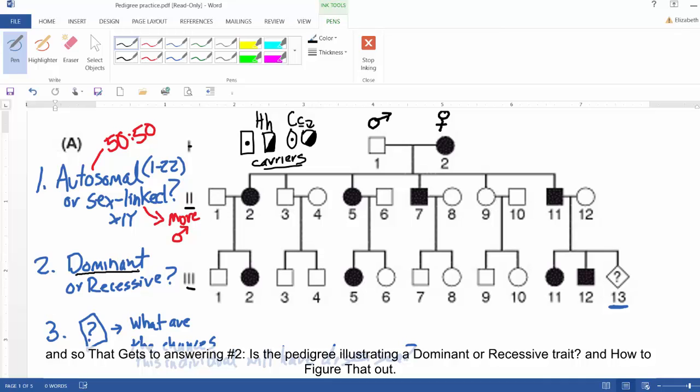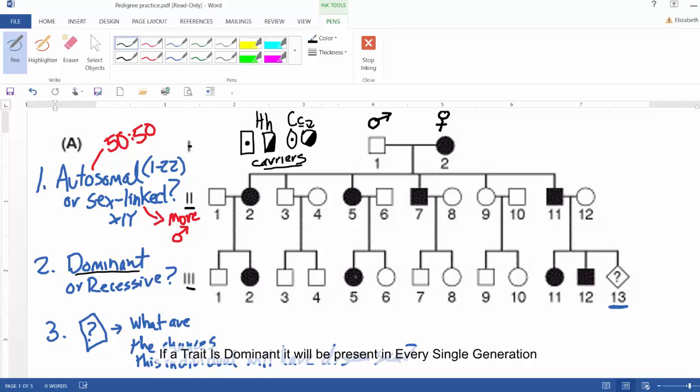And so that gets to the dominant or recessive and how to figure that out. So if a trait is dominant, you're going to see it present in every single generation, just like you see on this pedigree. So it's in the grandparents, the parents, and the children. And a parent must have the disease to pass it on to their offspring.